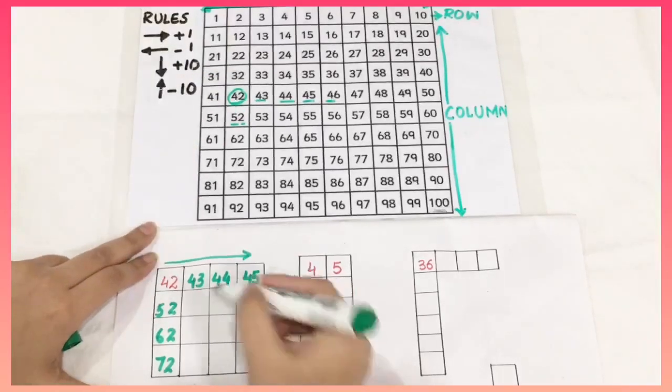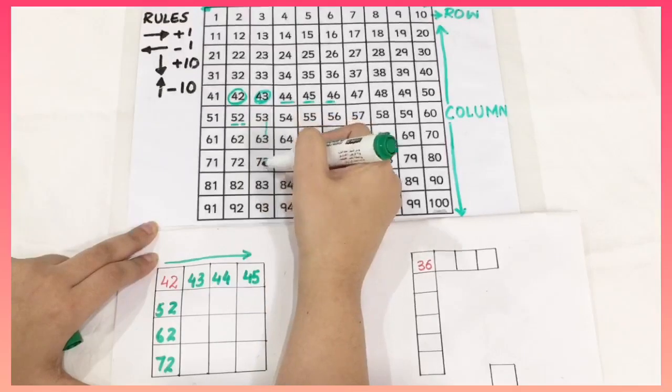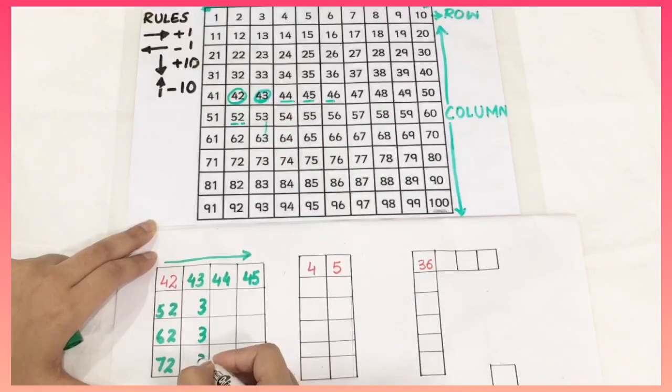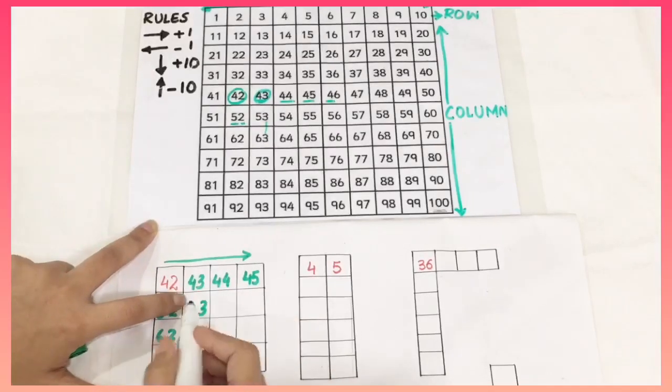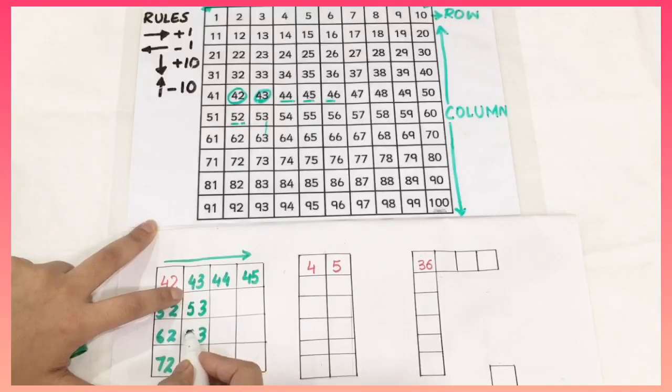Now again, I am going to identify, I have 43 here and again we have 3 in the units place. I am going to write 3 here and the numbers will increase, 4 and then I will have 5, then 6 and this is 7.